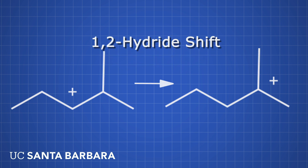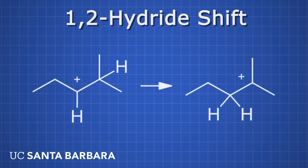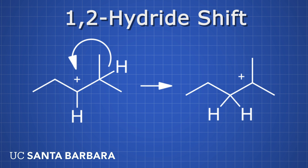If we look at what's happening in a 1,2-hydride shift in more detail, we can see that a hydrogen atom is essentially exchanging which carbon it's bonded to. In this rearrangement, the carbocation acts as an electrophile, and the nucleophilic electrons in the carbon-hydrogen bond are attracted to that electrophile and switch where the hydrogen is bonded. In the new structure, you can verify using formal charges that the carbocation has indeed changed from the secondary carbocation to the tertiary carbocation.